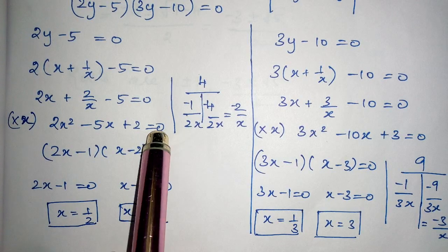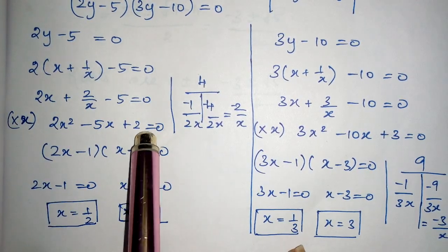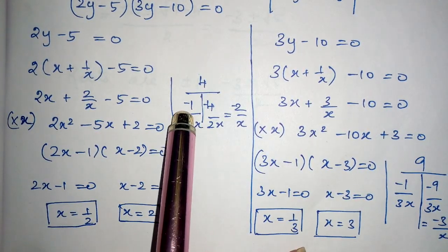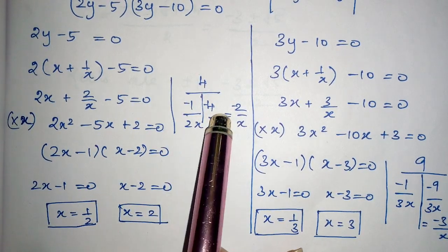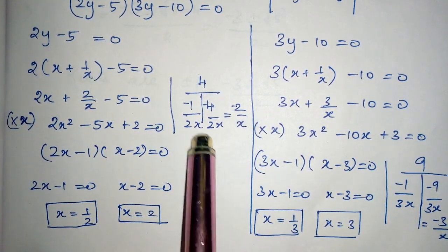It becomes 2(x + 1/x) - 5 = 0. To remove this denominator, multiply by x. So 2x² - 5x + 2 = 0, again a quadratic equation.